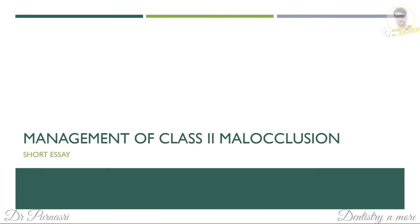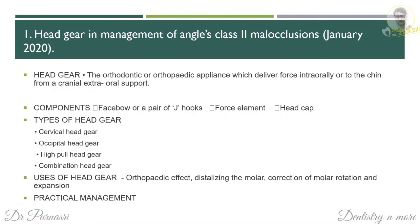The last topic is management of Class 2 malocclusions. A short essay asks about headgear in management of Angle's Class 2 malocclusion. A headgear is an orthodontic or orthopedic appliance that delivers force intra-orally or to the chin from cranial extra-oral support. The components are the face bow or J-hooks, a force element, and a headcap. You can draw and label a diagram. Write about the types and uses of headgear, the orthopedic effect — how it causes distal movement of the molar, corrects molar relation, causes expansion — and the practical management, i.e., how to clinically deliver the headgear.